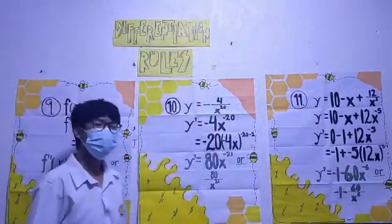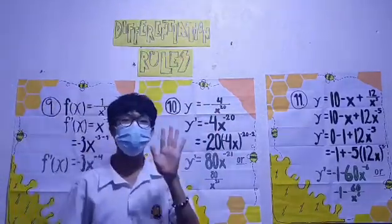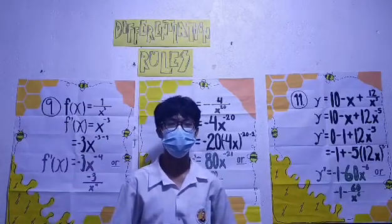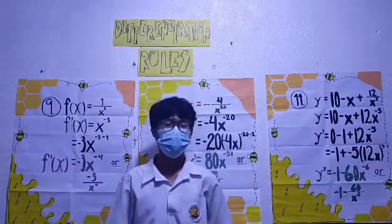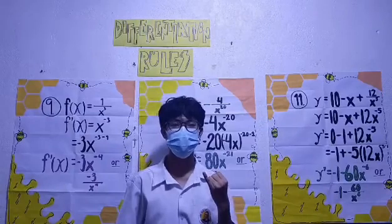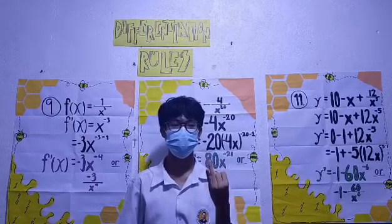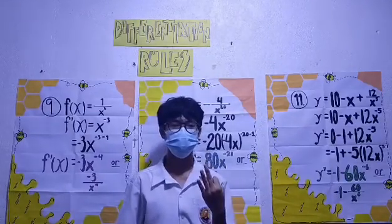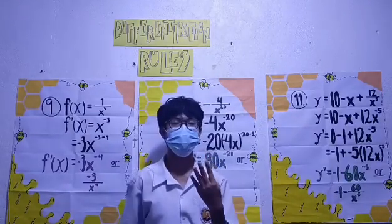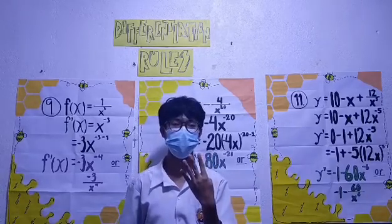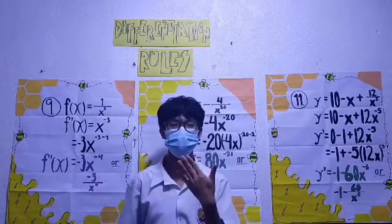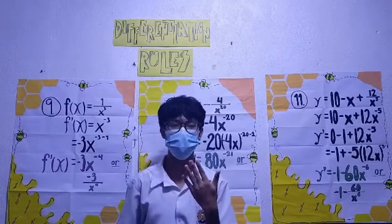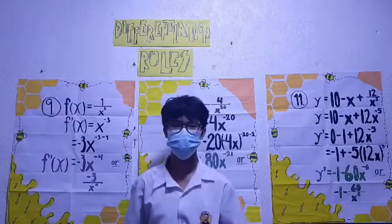In our topic, we'll discuss five rules so far. The first rule is called the Constant Rule. The second rule is called the Power Rule. The third is the Constant Multiple Rule. The fourth is the Derivative of a Sum or a Difference. The fifth, or the last rule that we discuss, is called the Product Rule.